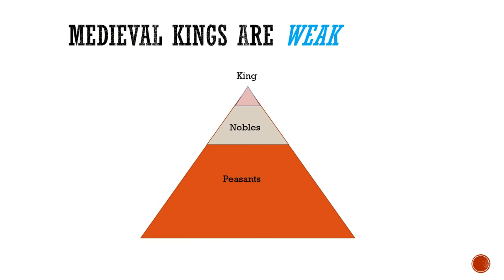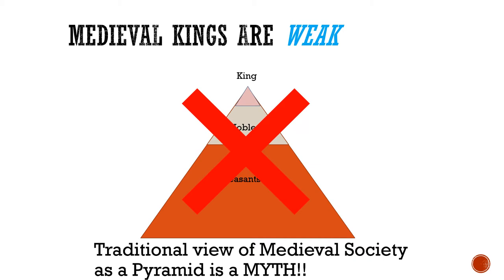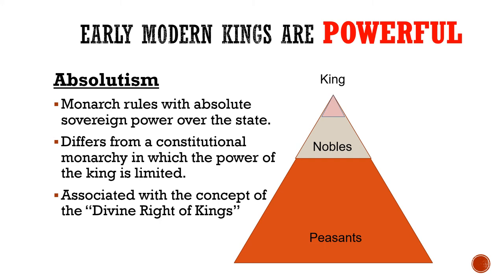As a reminder from our medieval unit: the traditional view of medieval society with kings at the top of a pyramid is a myth. Medieval kings were weak — they had to rely on powerful noble families to get anything done. However, once we get into the early modern period, things are very different. We finally do see kings at the top of a pyramid, with nobles in the middle and peasants at the bottom. Absolutism is what we call it when the monarch rules with absolute sovereign power — the buck stops with the king, who decides what the law is.